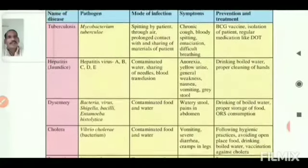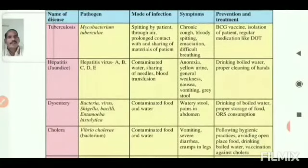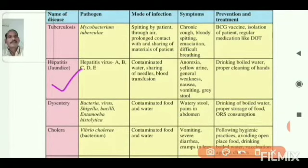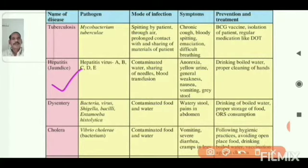The next disease is hepatitis. The pathogen is a virus. There are different types: hepatitis A, B, C, D, and E, each caused by a different virus affecting the liver.